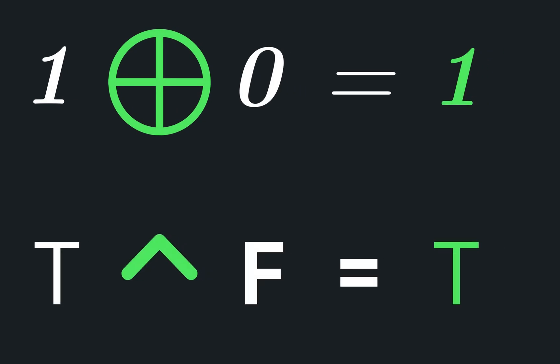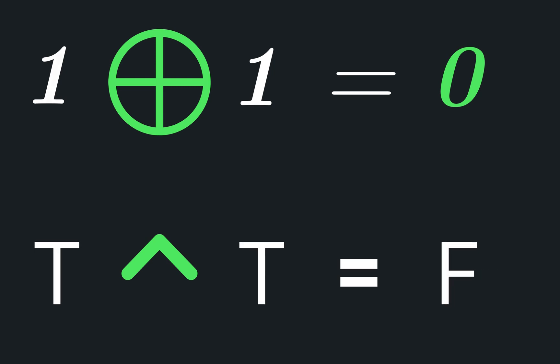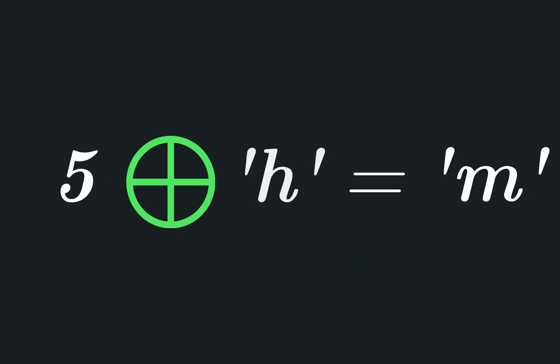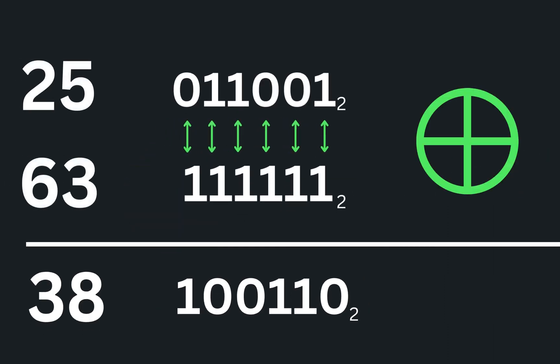So if I XOR 1 and 0, I'll get 1. 1 XOR 1 is 0, and of course 0 XOR 0 is 0. We can XOR ones and zeros together, but how is that going to help us? It turns out we can XOR practically anything — we just have to represent it as ones and zeros. Let's say I want to XOR the two numbers 25 and 63. We can represent these numbers in binary and XOR each corresponding bit together. This is called bitwise XOR.